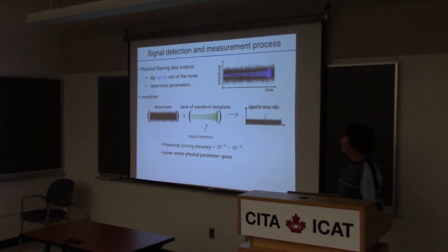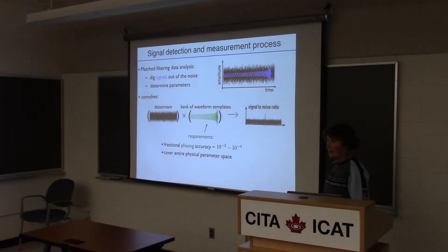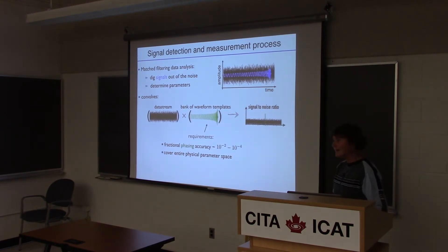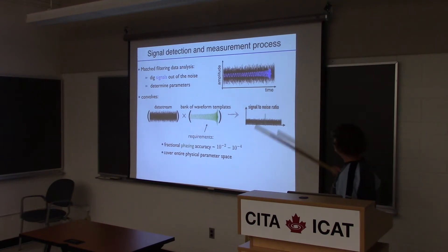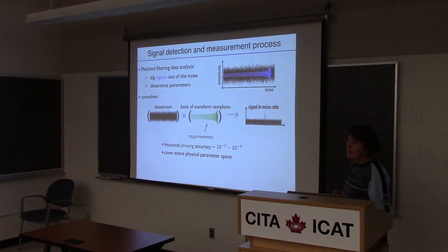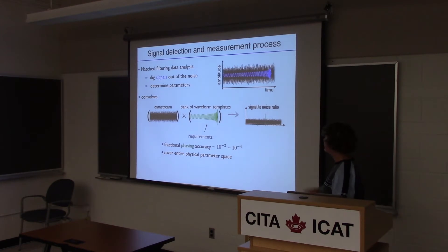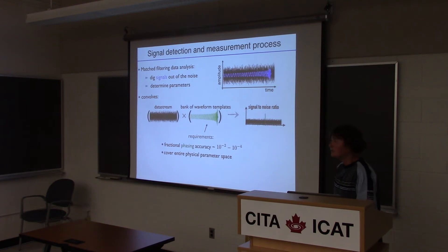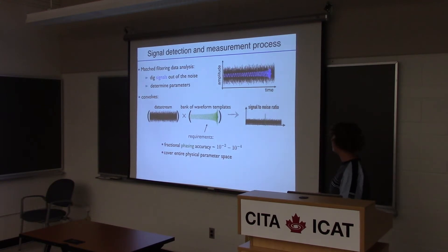These signals are very weak, as indicated by the fact that so much work has gone into making these highly sensitive detectors. For most signals, the amplitude of the actual gravitational waveform will be much less than the amplitude of the noise in the detectors. So one has to use a special technique to filter out these signals from the noise, and also at the same time measure the parameters of the signal to know what the source was.